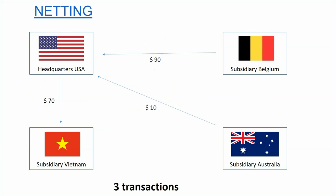A first, simple netting system would work like this: the Belgium subsidiary pays 90 million dollars to the USA headquarters, the Australian subsidiary pays 10 million to the headquarters, and then the headquarters pays 70 million dollars to the Vietnam subsidiary. So instead of 10 transactions, we only have three transactions.